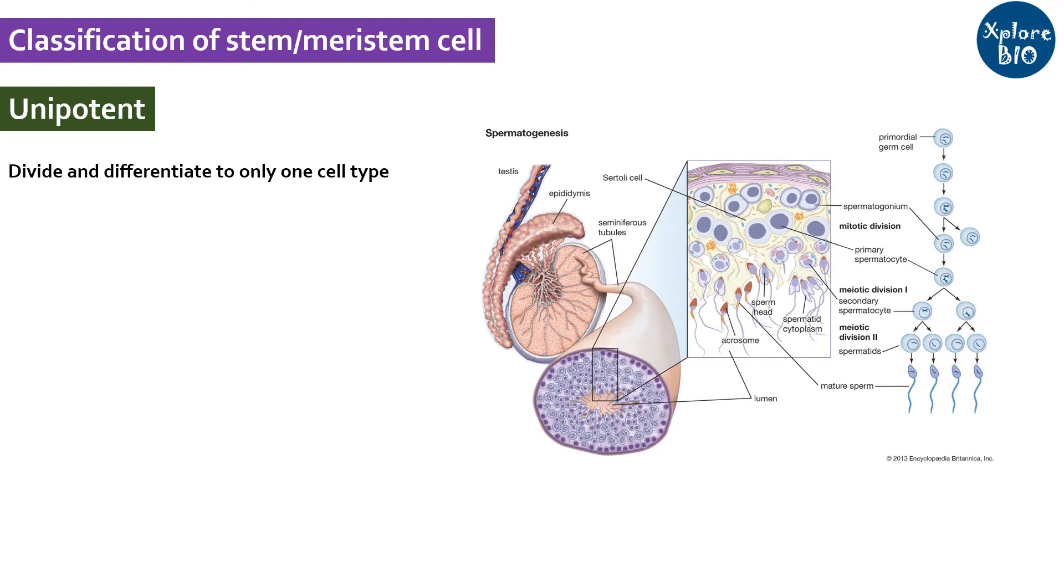A unipotent stem cell or meristem cell can divide and differentiate only to one type of cell. For example, a germline stem cell can produce only sperm cell. Similarly, in plants, marginal meristems of leaf will only form a particular type of leaf cells.